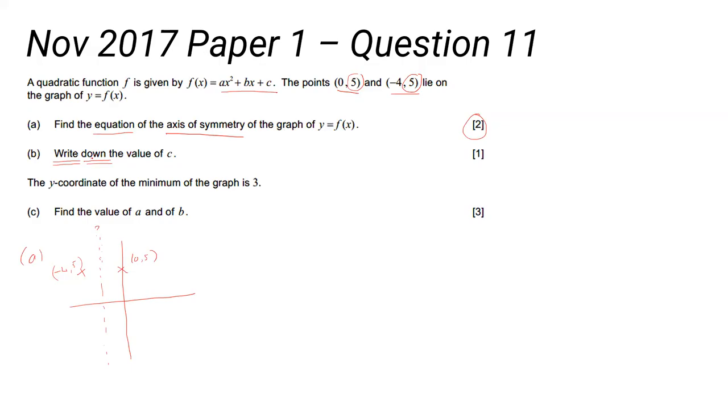It means basically that they don't expect you to do any written work for that. It means you can either write the value down directly or it's a calculation you do on your GDC with no need to demonstrate any working. It's only worth one mark and one mark is the value for c.